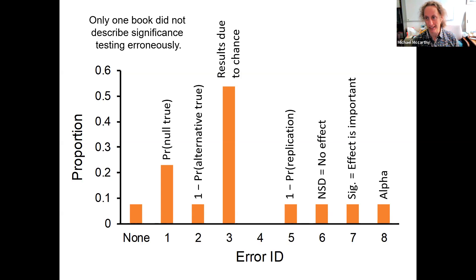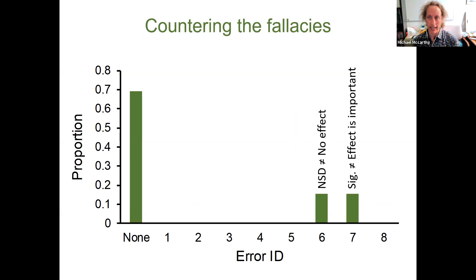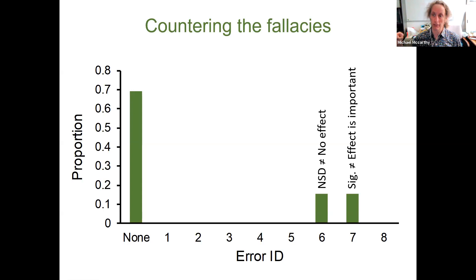A few books tried to counter some of these fallacies. Two books noted that non-significant differences do not mean there's no effect, and that significance does not mean a result is important. However, one of those books advised defining whether you mean importance or statistical significance when using the word 'significant,' but then throughout the book did exactly the opposite — using 'significance' without that distinction. They tried to counter the fallacy but didn't follow through in practice.